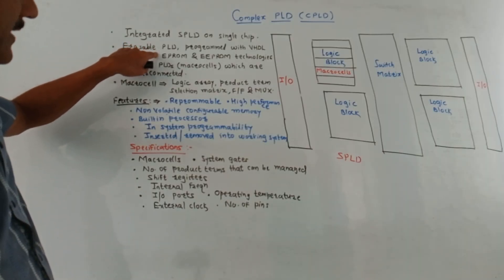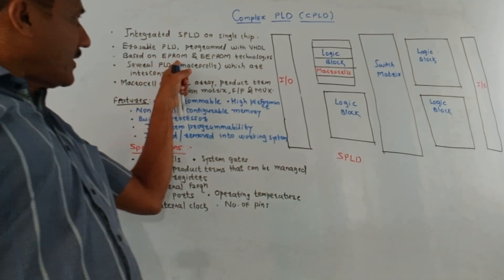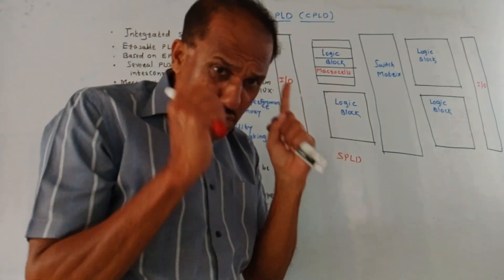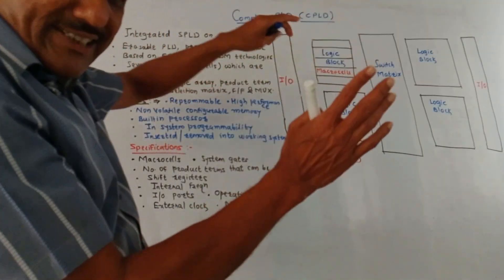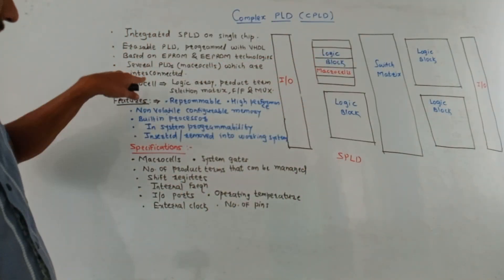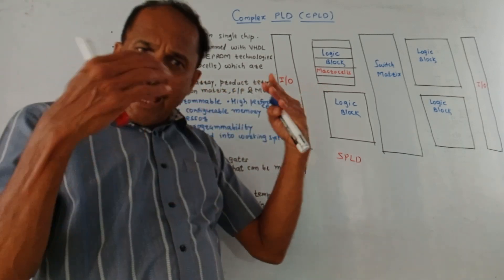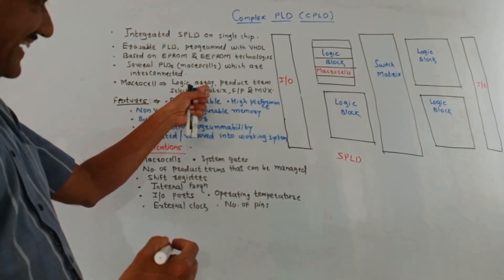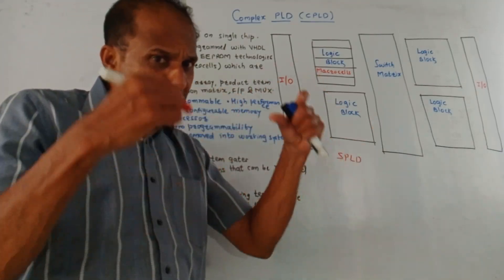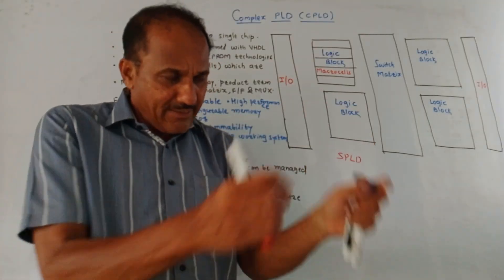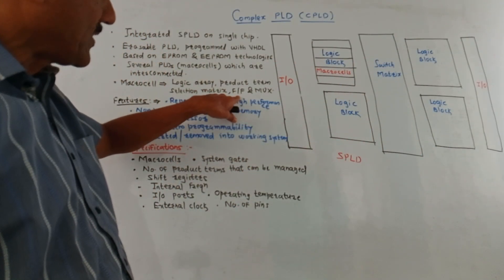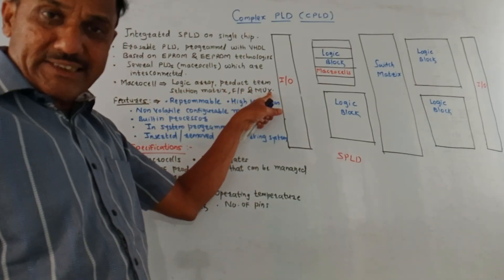It is an erasable PLD programmed with VHDL, based on EPROM and EEPROM technologies. It consists of several PLDs; each PLD is called a macro cell. N number of macro cells are used in one functional block, and all these macro cells are internally connected. The macro cell basically consists of an array of AND and OR gates — logical arrays, then a product term selection matrix. It also consists of flip-flops used to store data, and the macro cell also makes use of a MUX, that is multiplexer.